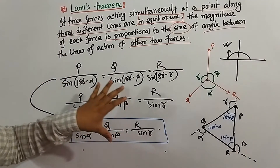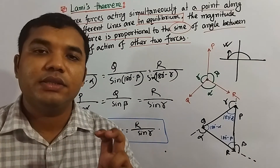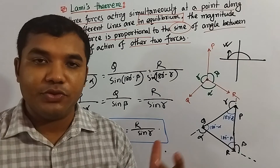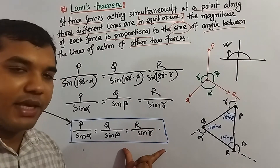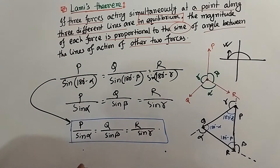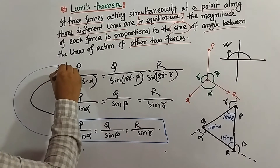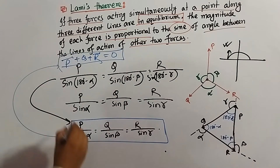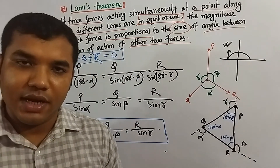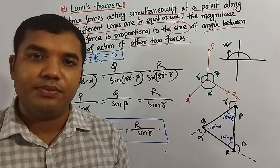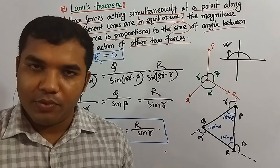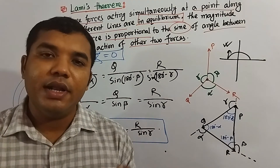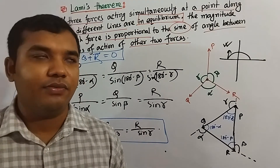So, dear students, that was Lamy's theorem. And the converse theorem of Lamy's theorem — the converse proof should actually work the other way: this part will be given, and from here we need to prove the equilibrium condition. If we can go that way, then our converse theorem will also be proved. So that is our basic concept of Lamy's theorem. Now, let us actually solve a math from this part.